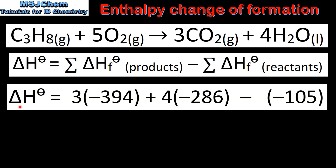Next we input the values from table 12 into the equation. The standard enthalpy change of formation value for carbon dioxide is negative 394 kJ/mol. The coefficient in front of the carbon dioxide is 3, so we multiply this value by that number. Next we have the H2O, and the standard enthalpy change of formation value for H2O is negative 286 kJ/mol. The coefficient in front of the H2O is 4, so we multiply this value by the same number.